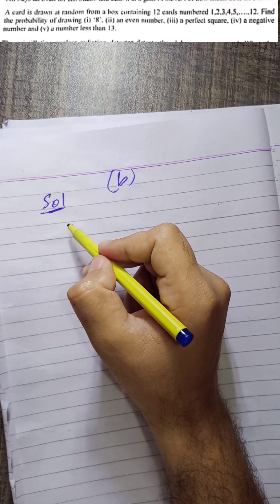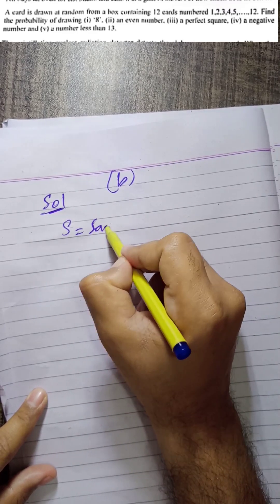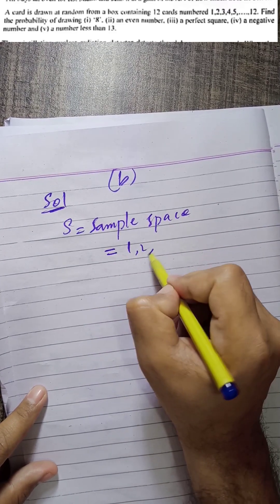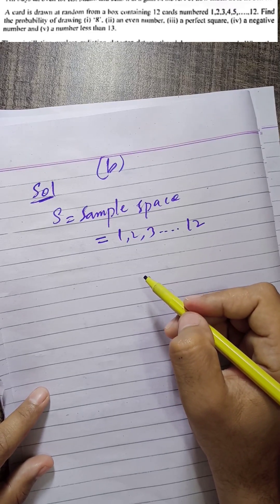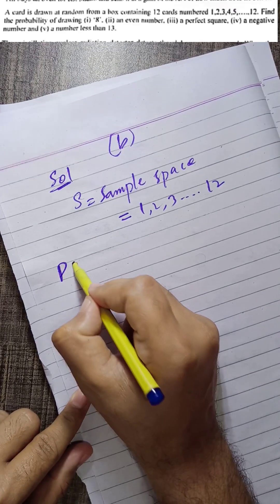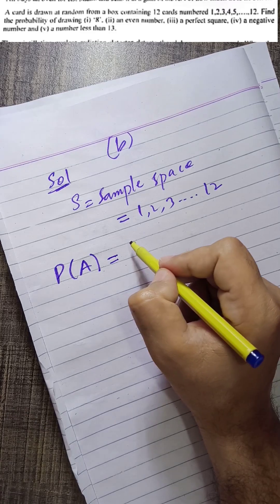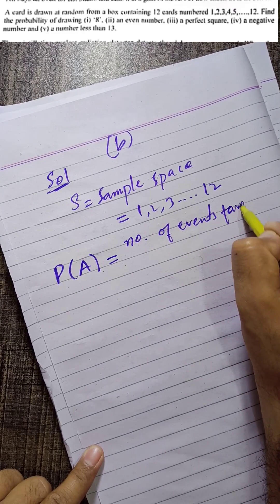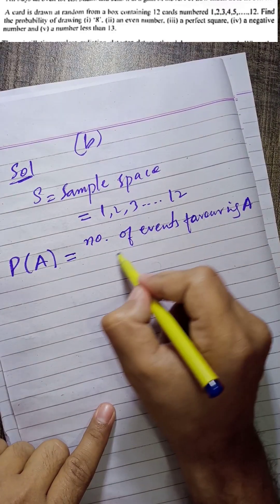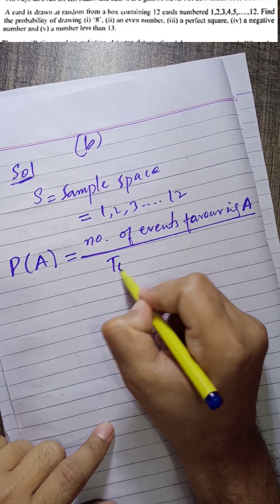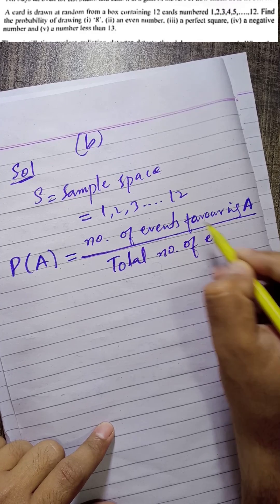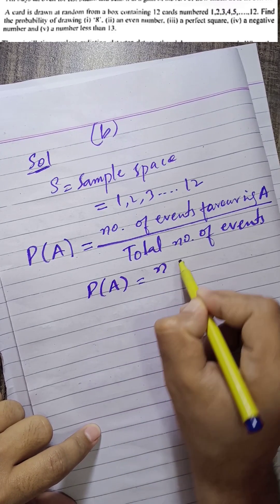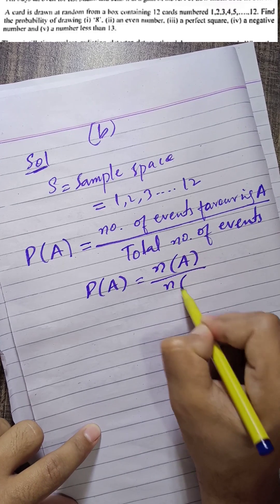The sample space — the total number of cards — is the set {1, 2, 3, ... up to 12}. The probability of an event A is always equal to the number of events favorable to A divided by the total number of events in the sample space.